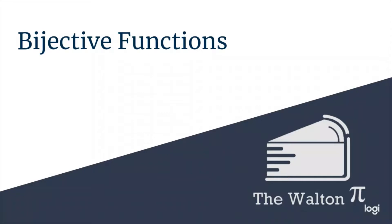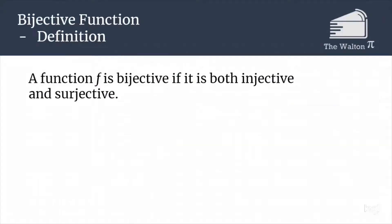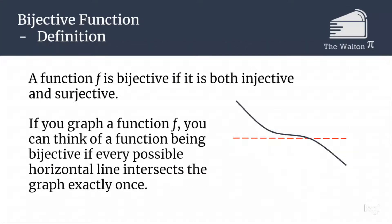The last type of function we're going to talk about are what are called bijective functions. These are functions that are both injective and surjective. So if we graph a function, that means a function is bijective if every horizontal line intersects the graph exactly once.